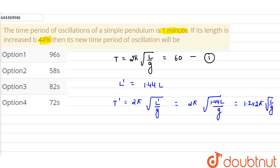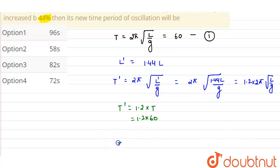Now 2π under root L upon g is nothing but the time period originally, so T dash will be equals to 1.2 into T. And T is 60 seconds, so this will be equals to 1.2 into 60.